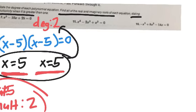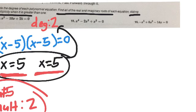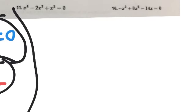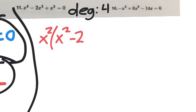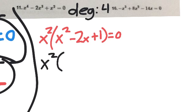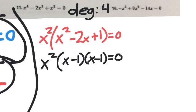Now we look at the next one: x to the 4th minus 2x cubed plus x squared. First thing, state the degree — the highest exponent is 4, so this is a degree 4 polynomial. That tells me I'm going to find 4 total roots, 4 total x-intercepts. Some of them can be imaginary. This one has 3 terms, but all of them have an x, so I would take a GCF of x squared, leaving me with x squared times x squared minus 2x plus 1 equals 0.